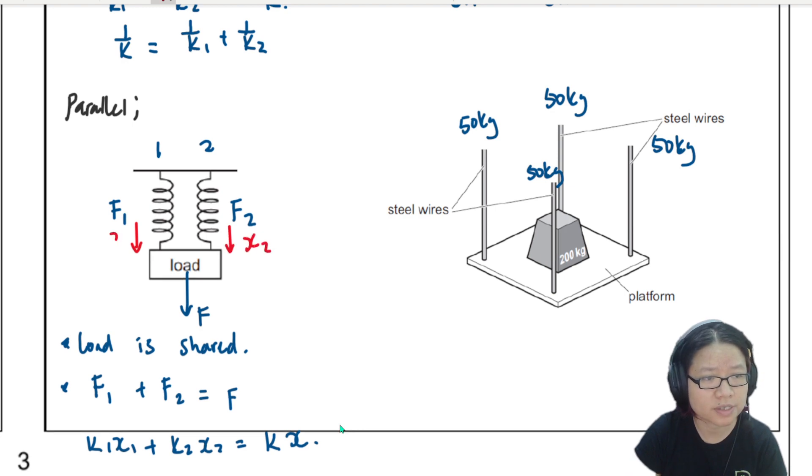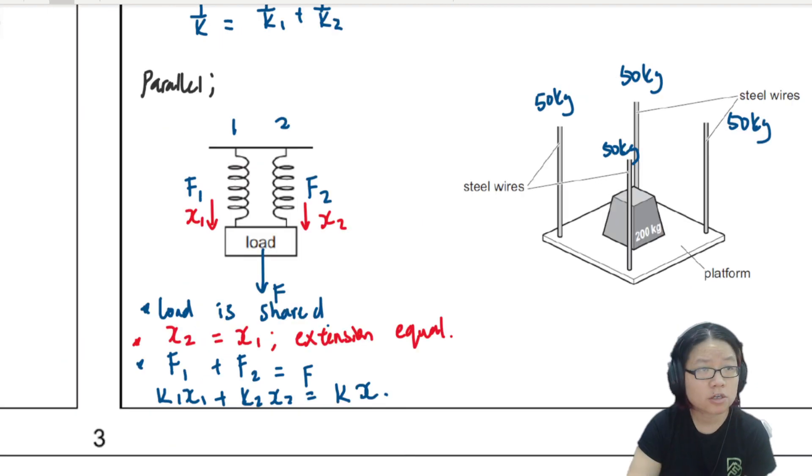So they will have the same extension. So the load is shared, and the extension X2 is equal to X1. So if we put it into an equation, F1 + F2 is F because they share the load, and I can put K1X1, K2X2 is total spring constant, total extension, and the extensions are all equal. So I can just cancel them.